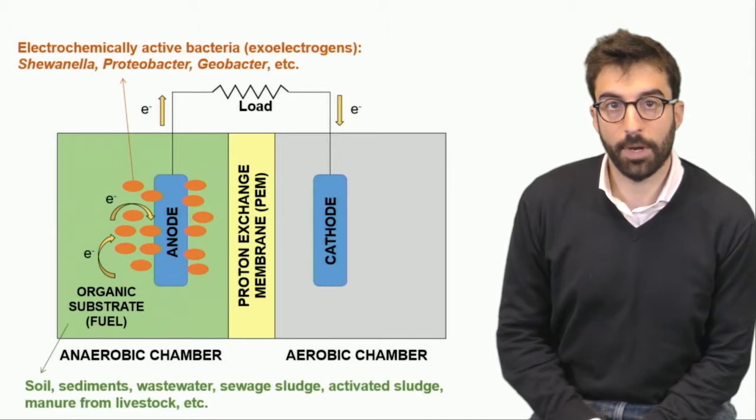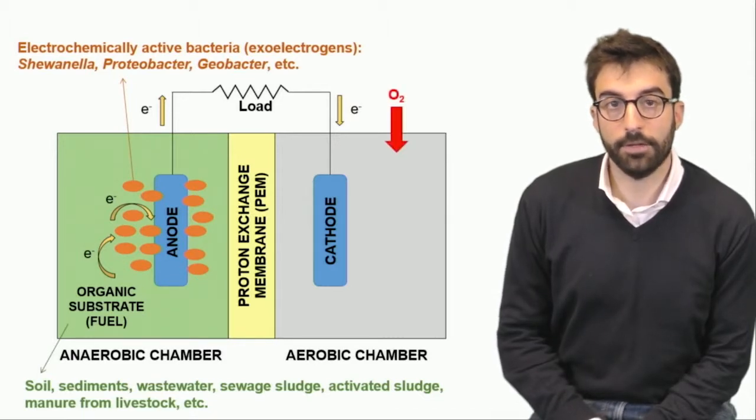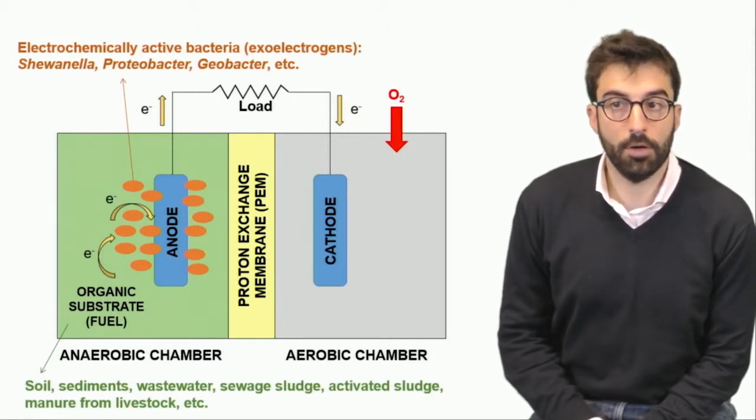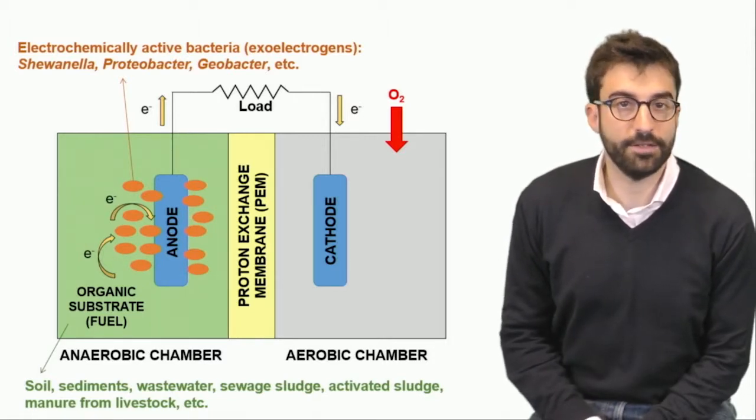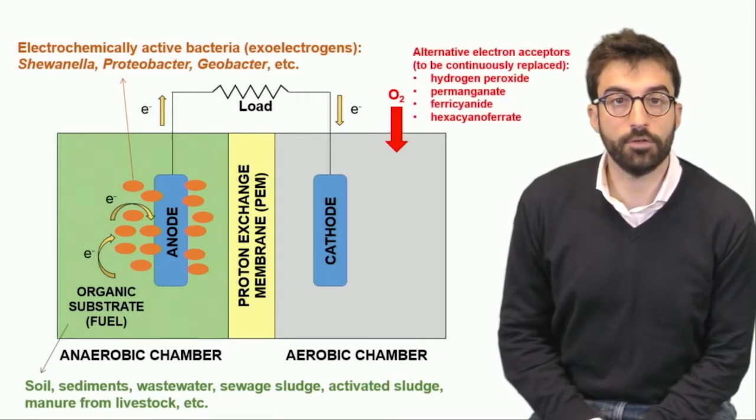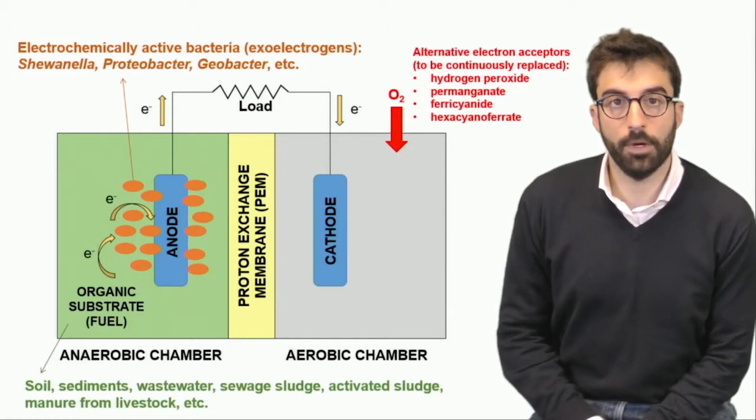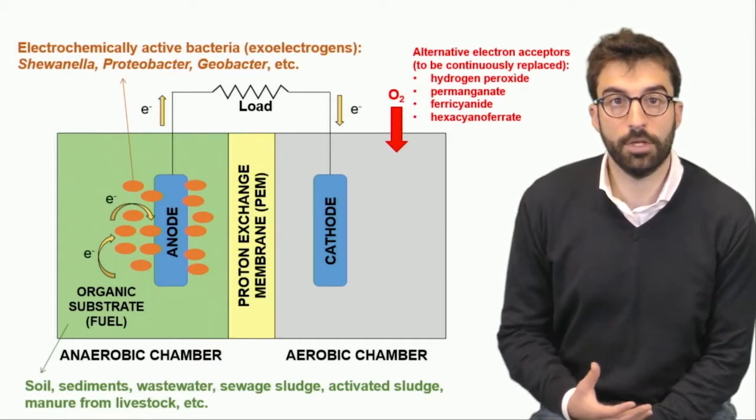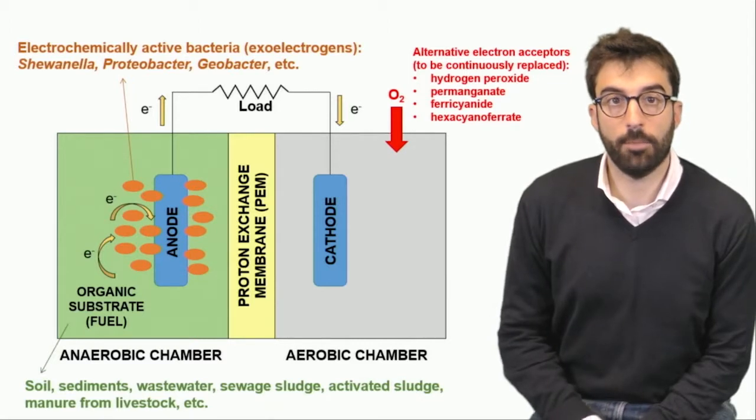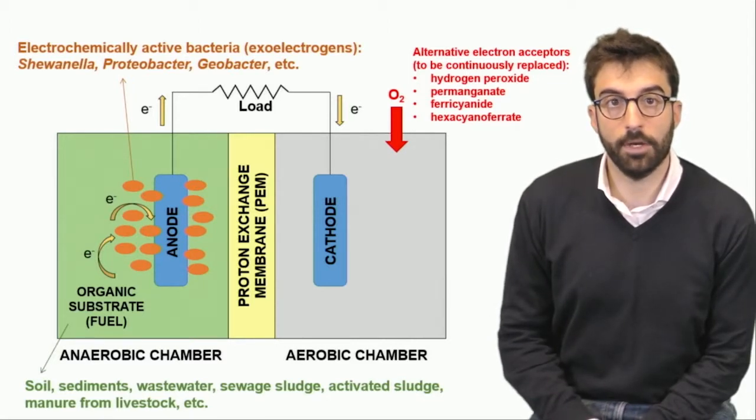So we can supply electrons to the circuit, and on the other side we need to complete the process and we usually supply an oxidant, mainly oxygen or usually air. That's why it's an aerobic chamber. We can also supply different kinds of receptors like peroxide or permanganate, but of course these materials need to be substituted, while with oxygen it's much easier because we can just blow air to the chamber to renew the presence of the oxidant.